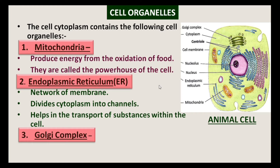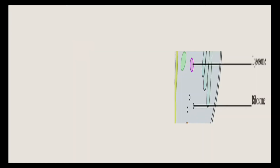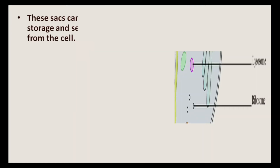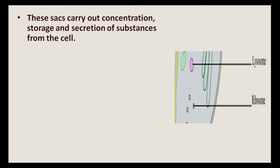The dark green colored structure is called Golgi complex. Golgi complex is formed of stacks of flat membranous sacks. These sacks carry out concentration, storage and secretion of substances from the cell.